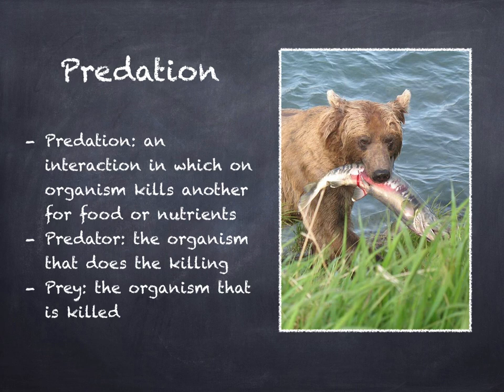If there are too many predators in an area, the result is often a decrease in the size of the prey population. But a decrease in the number of prey results in less food for their predators. Without adequate food, the predator population can decline. Generally, populations of predators and their prey rise and fall in related cycles.